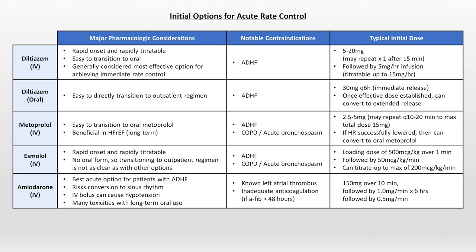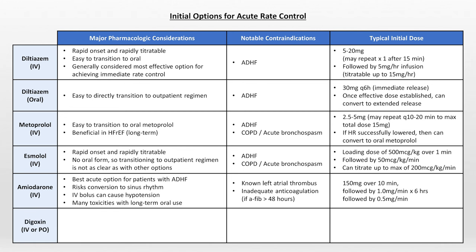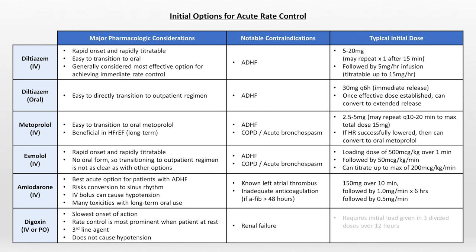The final conventional option for acute rate control is digoxin, which can be given by either IV or oral routes. Digoxin has the slowest onset of action of those meds listed, and rate control is most prominent only when the patient is at rest. Thus it's generally considered a third-line agent for most patients after calcium channel blockers and beta blockers, but it doesn't cause hypotension and is not contraindicated in heart failure. It is renally excreted with a relatively narrow therapeutic window, so it's best to avoid in patients with renal failure. Loading is usually done with 3 divided doses over 12 hours, with adjustments for abnormal renal function — for which I would recommend consultation with a pharmacist.